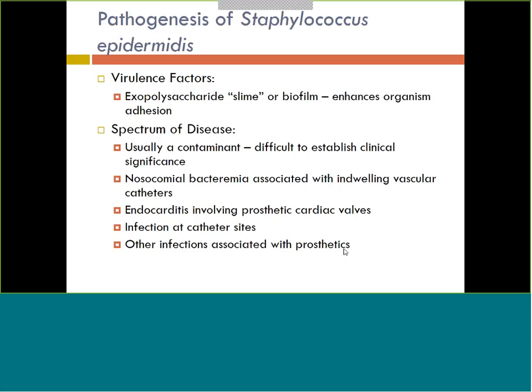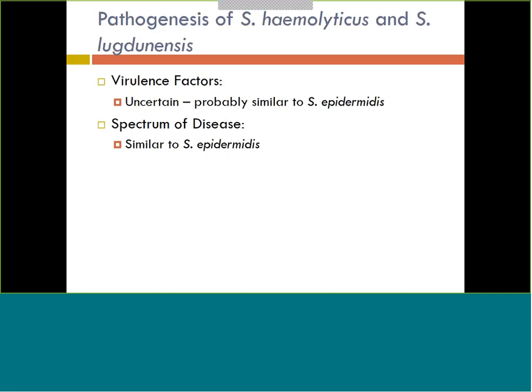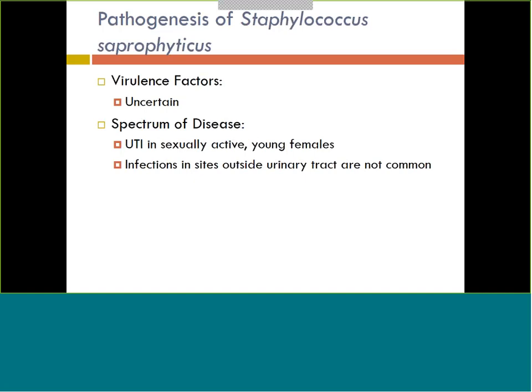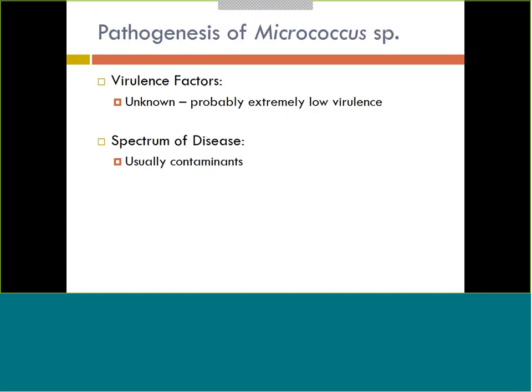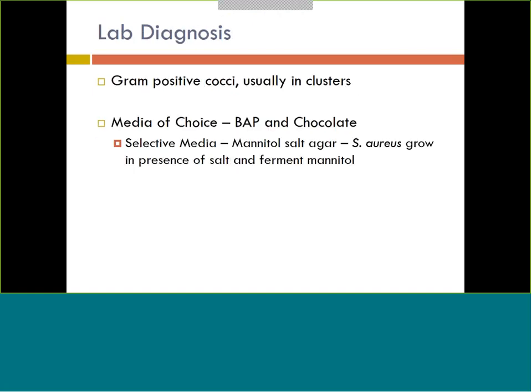Staph hemolyticus and staph lugdunensis are very similar to staph epi, so we've covered those. Staph saprophyticus is the big one with UTIs in younger females. Micrococcus has very low virulence — it barely causes any disease — so pretty much just contamination is all you need to remember for micrococcus.